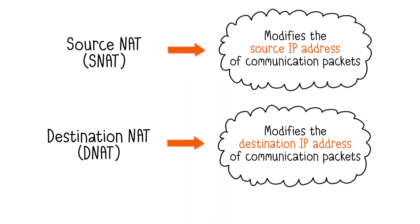What we've just covered is known as source NAT. There's another type called destination NAT. Source NAT changes the source IP of communication packets, while destination NAT changes the destination IP.